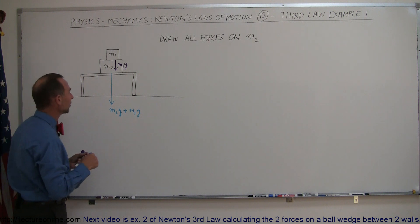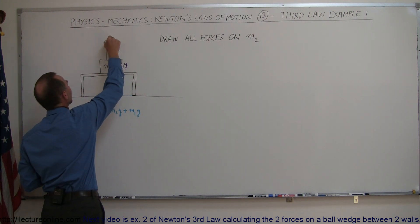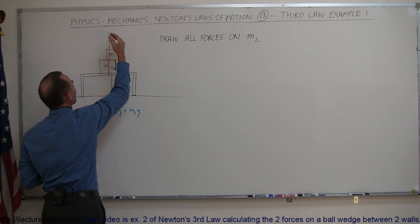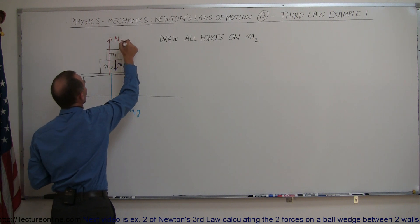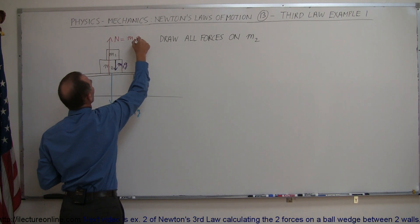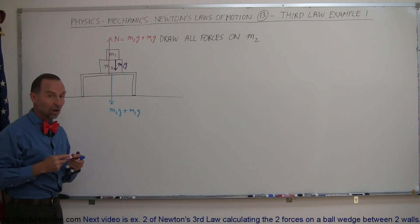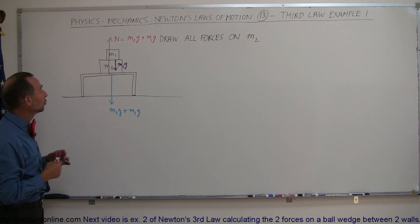Now we can draw the normal force. Now it's okay, now there's a reactionary force pushing back, the normal force, and now you realize that the magnitude of the normal force is equal to the sum of the weight of these two which would be m2g plus m1g.